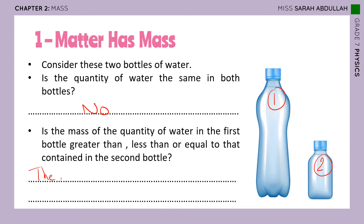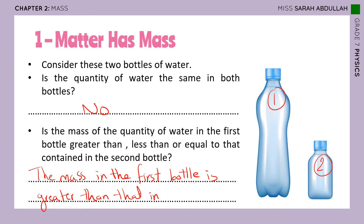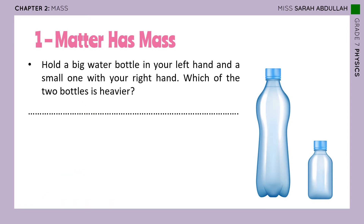The mass in the first bottle is greater than that in the second one. Now, hold a big water bottle in your left hand and a small one in your right hand. Which of the two bottles is heavier? Of course, the big water bottle is heavier.